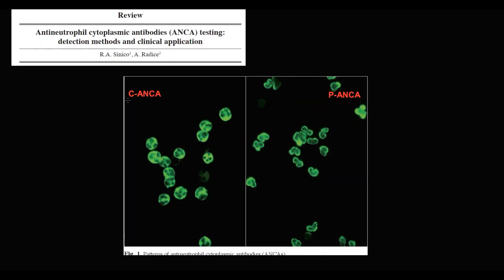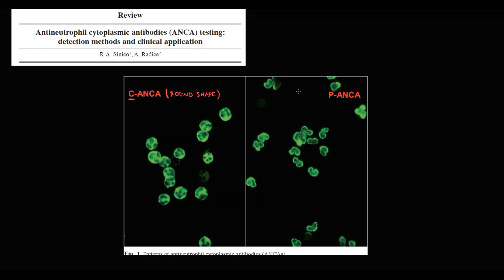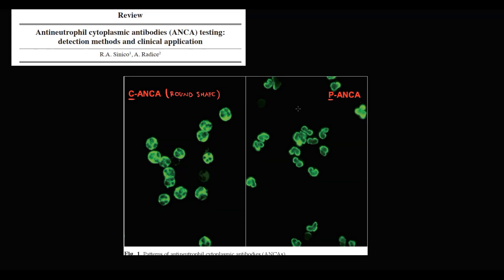So that's how they look like in real life. C-ANCA gives a round shape on staining. The reason is that we determine autoantibodies. And autoantibodies in this case bind to PR3 enzyme in the cytoplasm. So autoantibodies will be scattered throughout the cytoplasm. And because neutrophils have a round shape, we can see the round shape with staining.